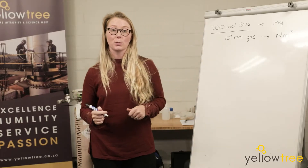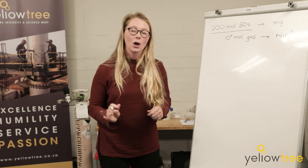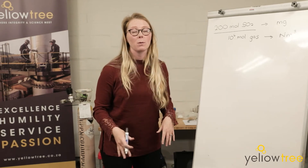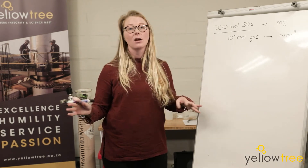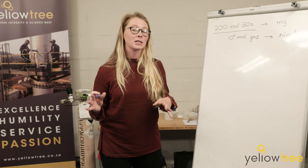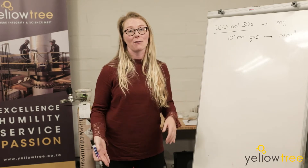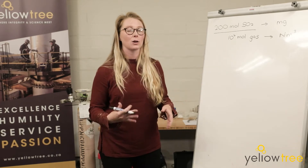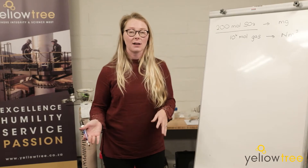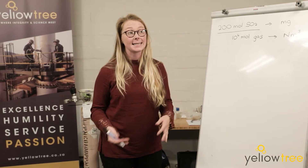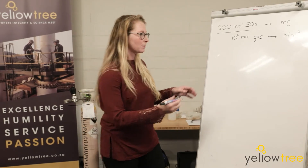Let's first work with the top of the equation. When we have moles and we want to convert it into a mass, what we do is use the molar mass of the pollutant in question. In this case, the molar mass of sulfur dioxide is 64 grams per mole.